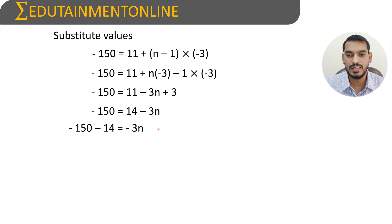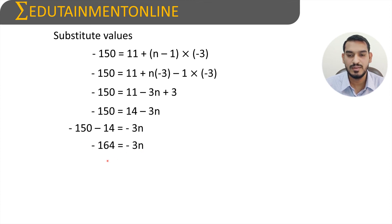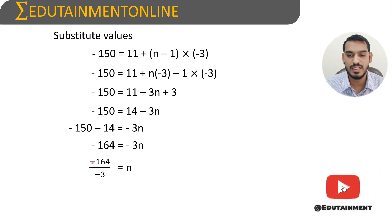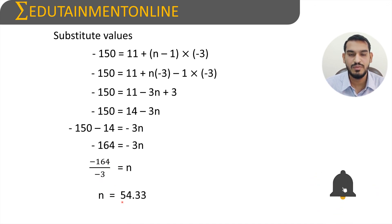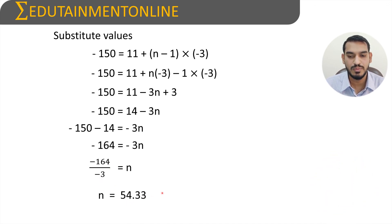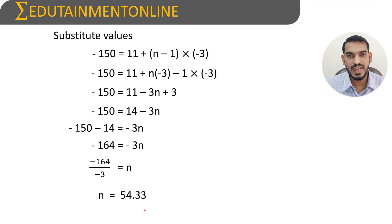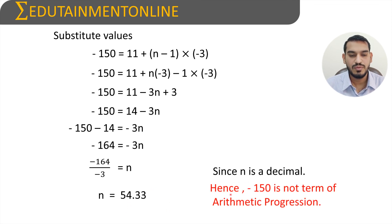Transposing 14 to the left-hand side: minus 150 minus 14 equals minus 3n, which gives minus 164 equals minus 3n. Transposing minus 3 to the left-hand side: n equals minus 164 divided by minus 3. The negatives cancel, giving n approximately equals 54.33. Since n must be a natural number and we got a decimal, therefore minus 150 is not a term of this arithmetic progression.